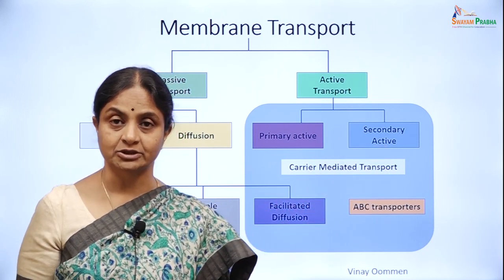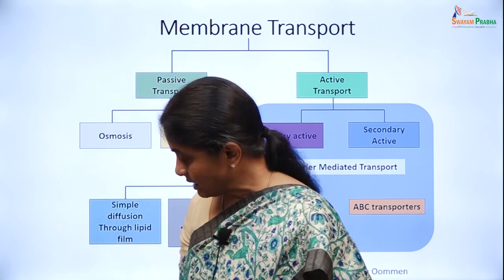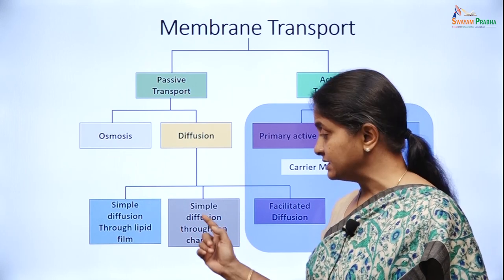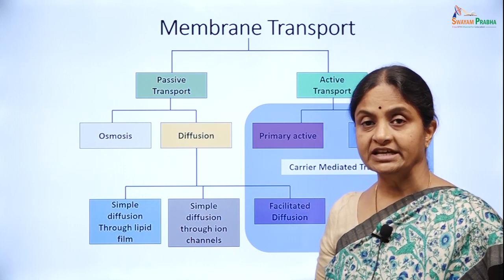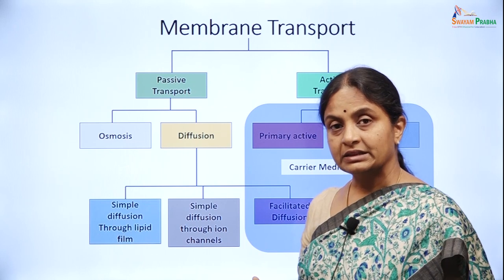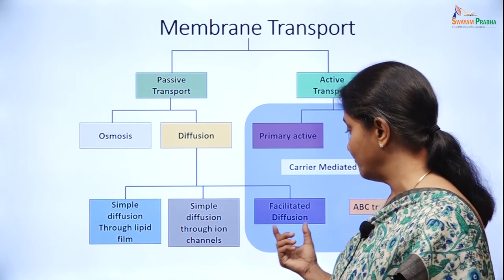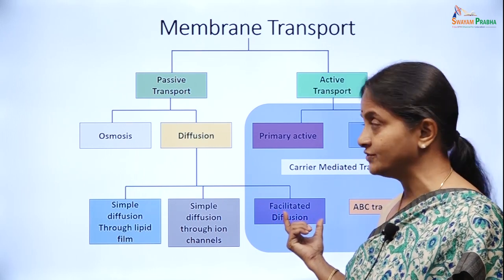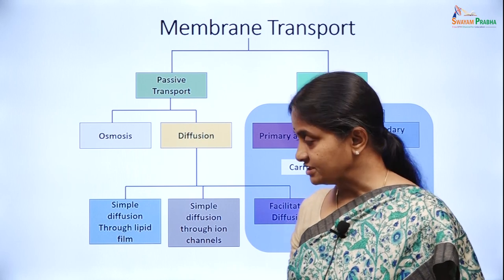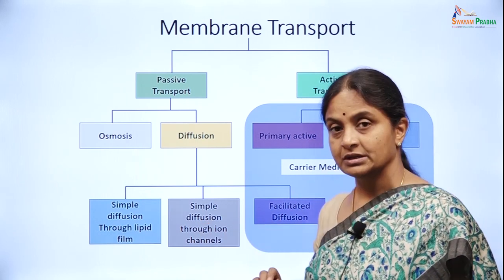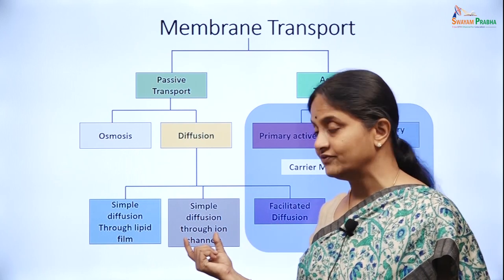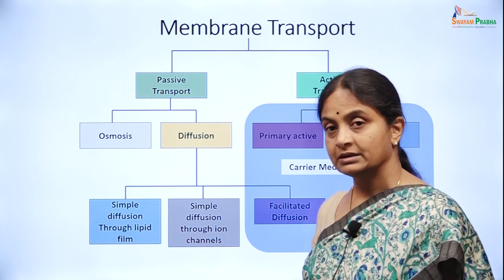Transport through ion channels is simple diffusion. There are some school textbooks which refer to diffusion through ion channels as facilitated diffusion, but that is not entirely correct because the term facilitated diffusion is technically reserved for carrier mediated transport processes. The difference between simple diffusion and facilitated diffusion lies in the kinetics of transport.